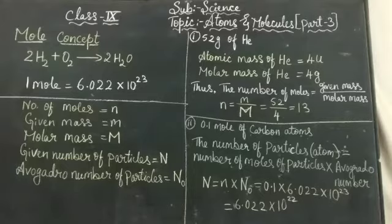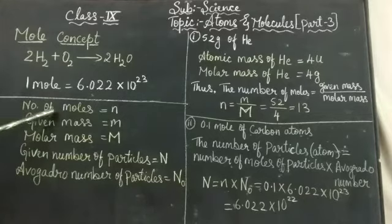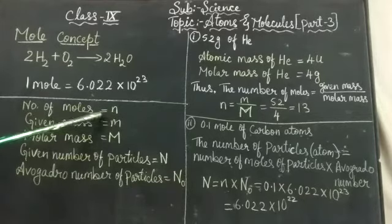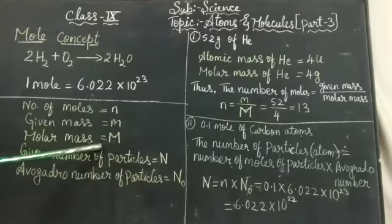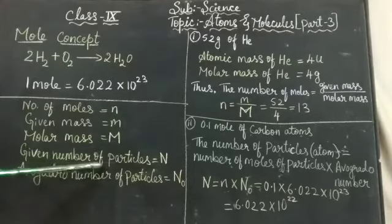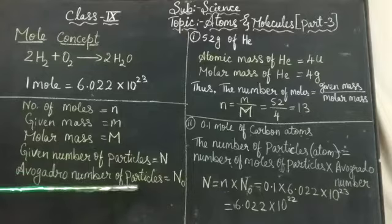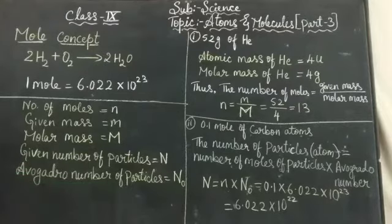Now you can see the example here. What I have taken. Number of moles will be given in small n. Given mass equals small m. Molar mass is nothing but the molecular mass in capital M. Given number of particles is N. And Avogadro number of particles will be given in N₀. Now what we have to do in the problems is just change from the moles to atomic mass from one to other.